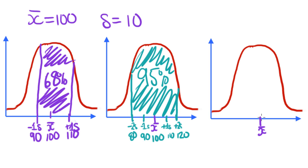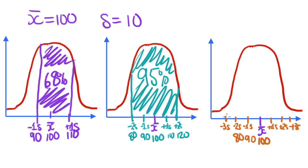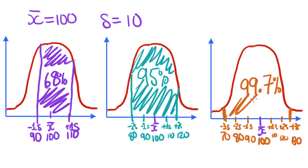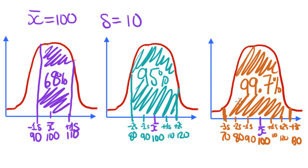And for the third graph, we're going to travel three standard deviations either side: down one is 90, down two is 80, down three is 70; up one is 110, up two is 120, up three is 130. So between 70 and 130 lies 99.7% of all the data within that range.